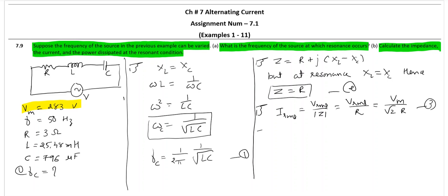At resonance, power dissipated. Who dissipates power? Obviously, resistance. So I RMS squared into R. So that is your fourth answer.